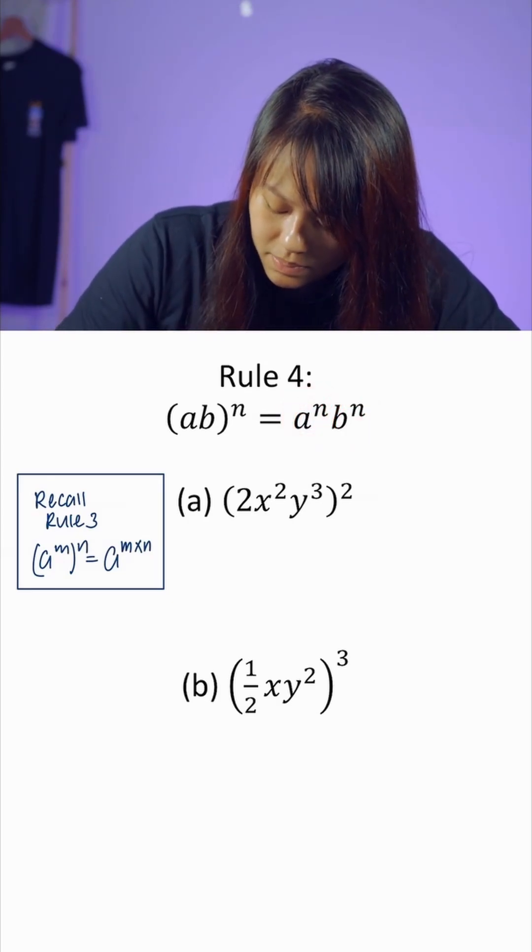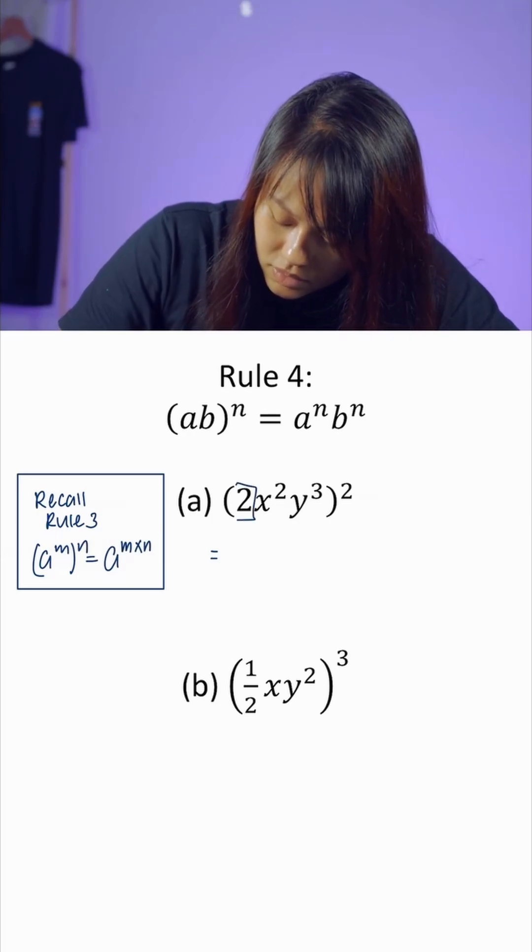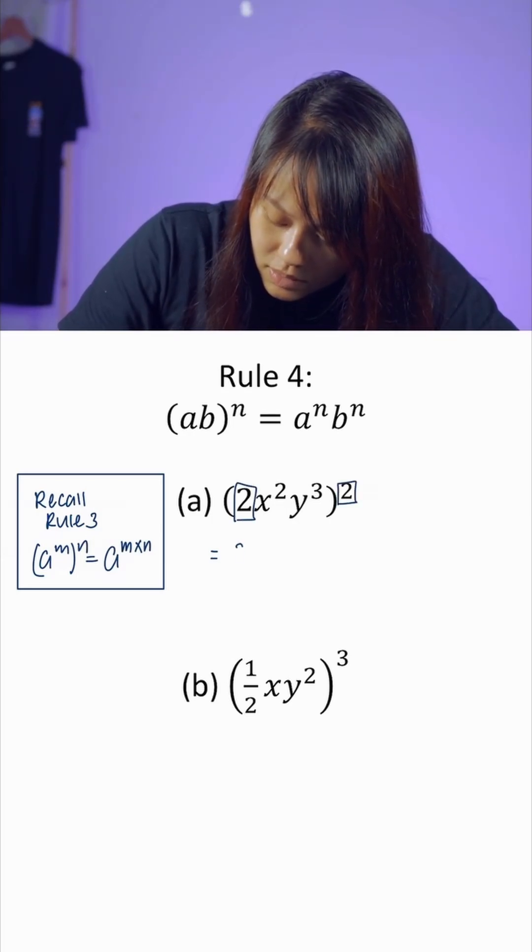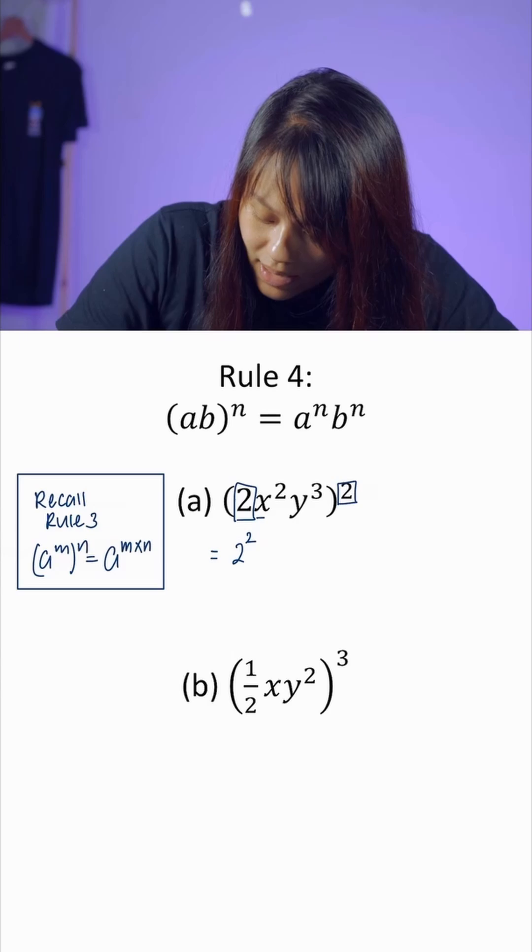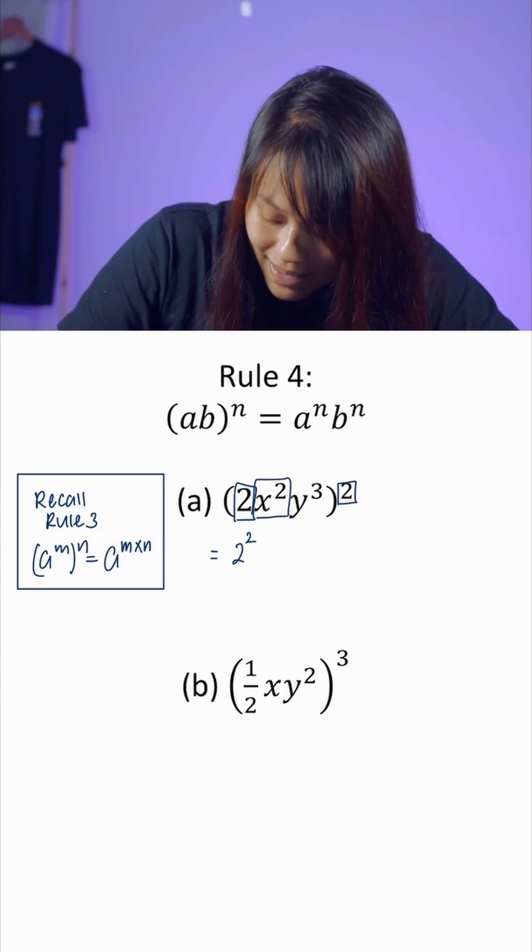We'll look at two examples. How does this rule work? We have (2x^2y^3)^2. 2 multiplies by itself 2 times, and x^2 multiplies by itself 2 times.